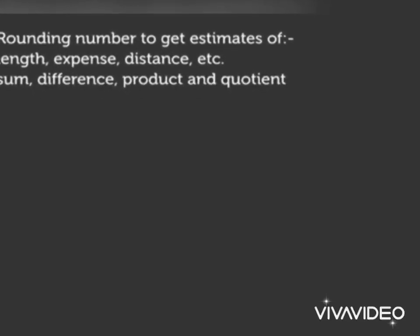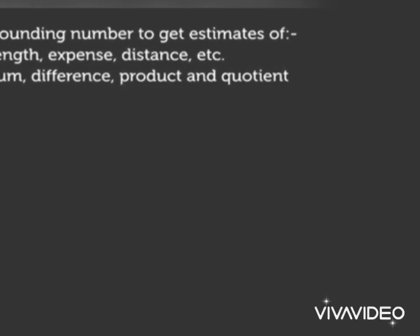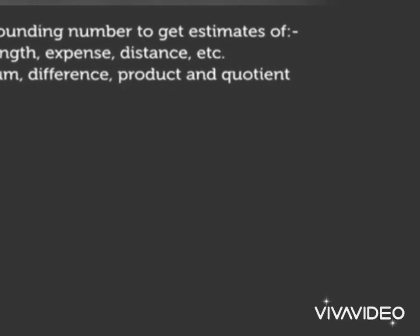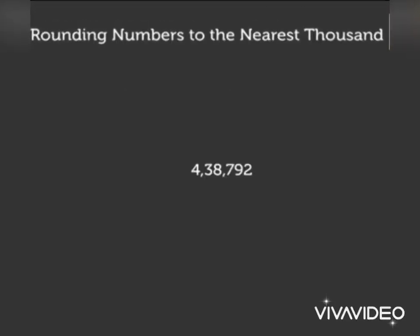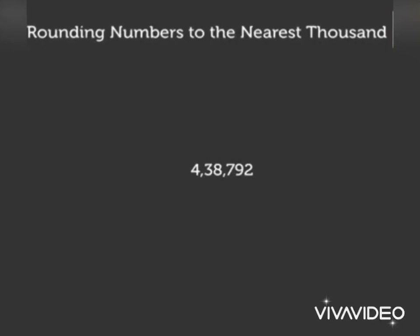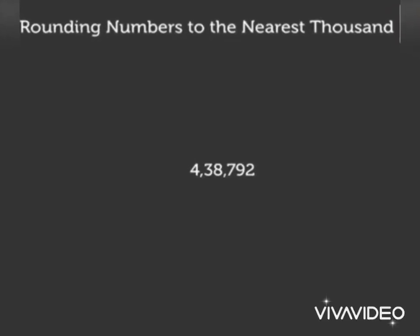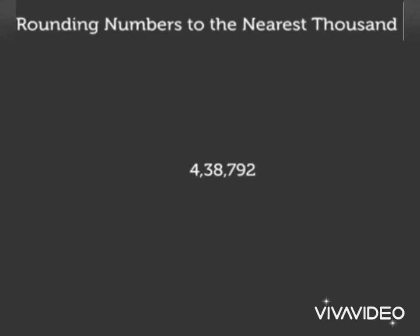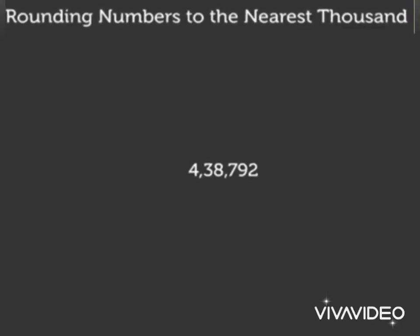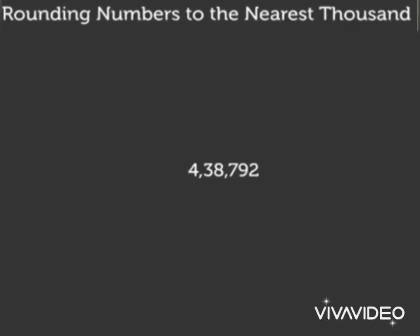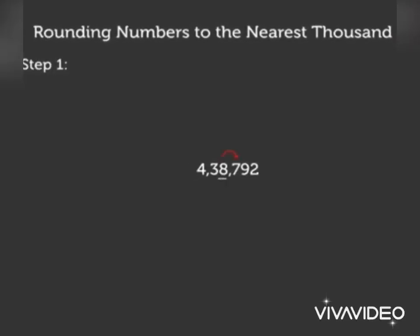So first, let me teach you rounding numbers to the nearest thousands. Let us take an example to understand it in a better way. The example is 4,38,792.